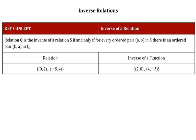And now let's recognize that there are words that go with this, so let's make sure we don't skip by it too much. Relation Q is the inverse of a relation S. So here is the original relationship S. And then here's the inverse Q.